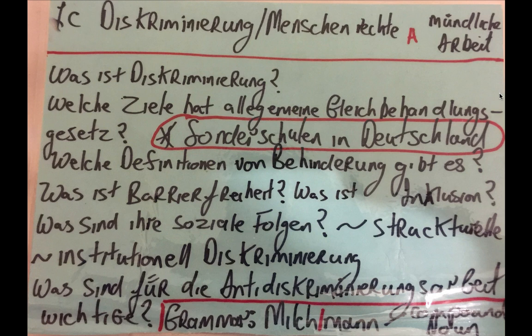Zum Beispiel Sonderschulen in Deutschland — was wissen Sie darüber? Welche Definitionen von Behinderung gibt es? Was ist Barrierefreiheit? Oder was ist Inklusion? Und als Folgen: Was sind ihre sozialen Folgen? Was wissen Sie über die zwischen Ideologien, zum Beispiel strukturelle und institutionelle Diskriminierung in Irland oder europäisch? Was sind für die Antidiskriminierungsarbeit wichtig?